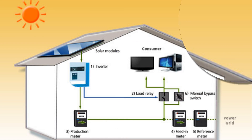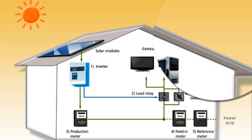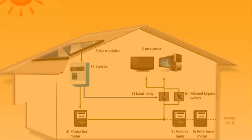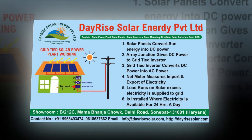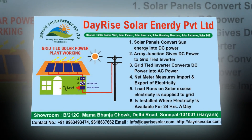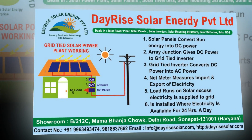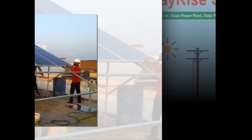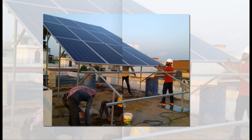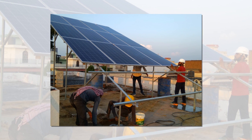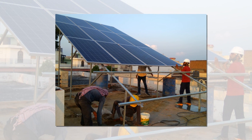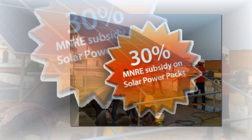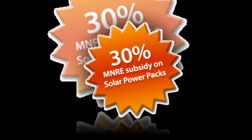Solar energy or solar power is perhaps the cleanest, most reliable form of renewable energy available to mankind, and it can be used in several forms to help power your home or business. Solar-powered photovoltaic panels convert sunlight into electricity by stimulating electrons in silicon cells using the photons of light from the sun.